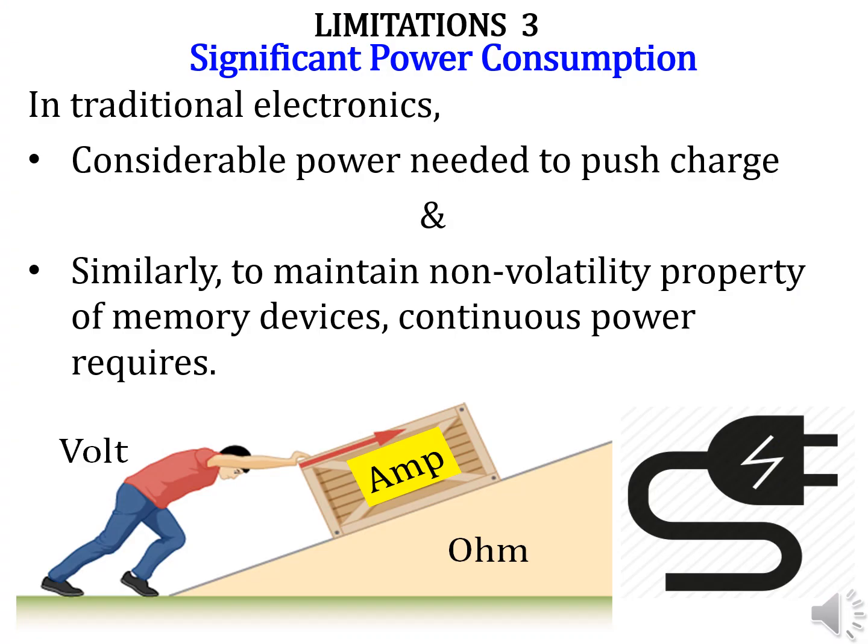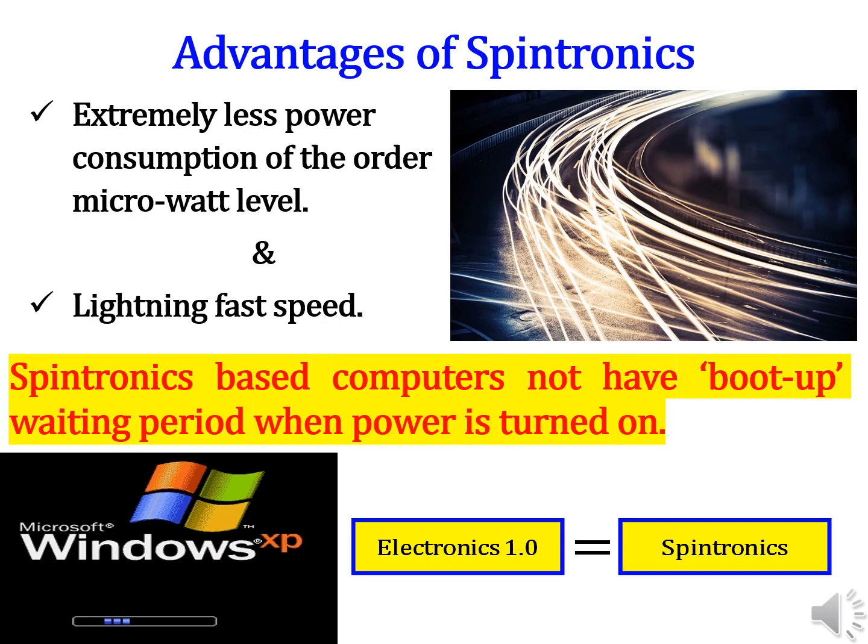Another limitation of electronics is considerable power consumption. In traditional electronics, considerable power is needed to push charges. Similarly, to maintain the non-volatility property of memory devices, continuous power is required. From all this discussion, it is clear that a shift from existing electronics to new technology is obligatory to overcome the problems associated with existing electronics. In simple words, a new version of electronics is needed in the form of spintronics.